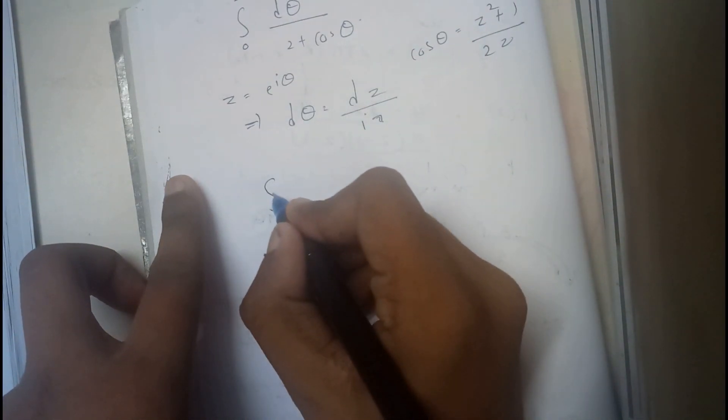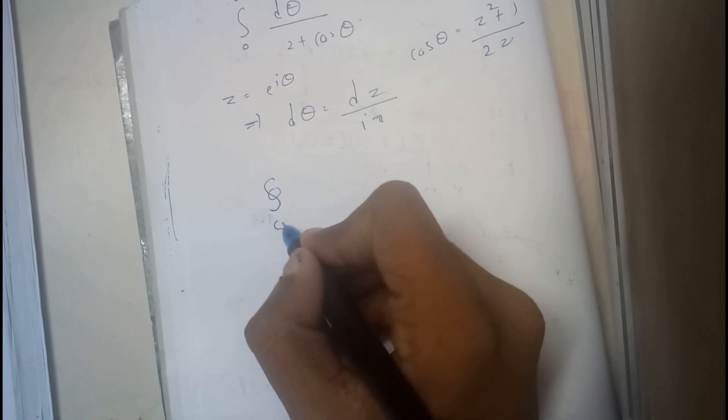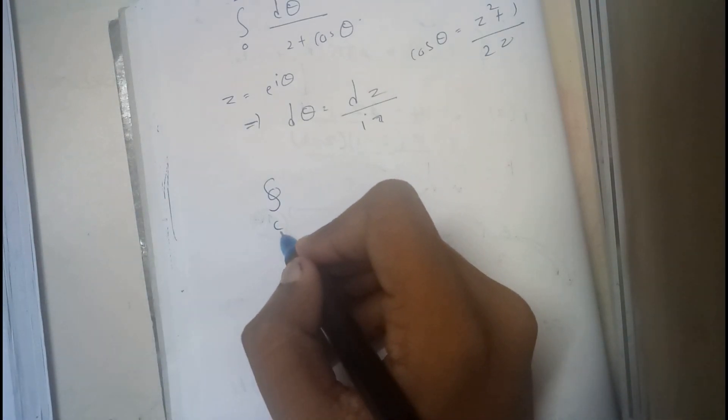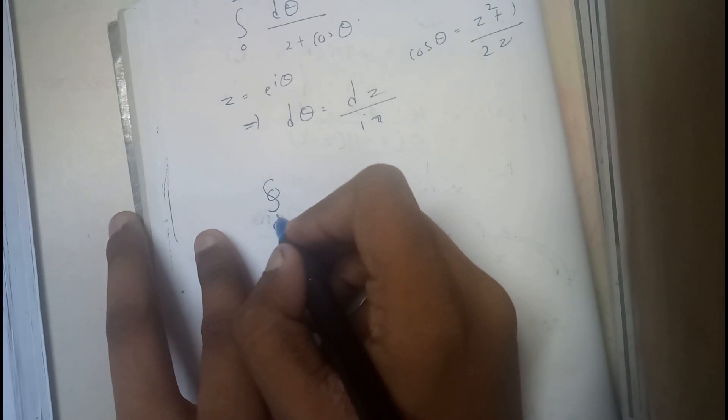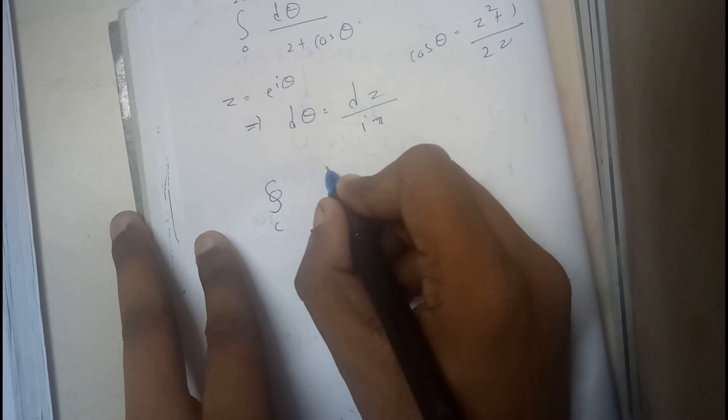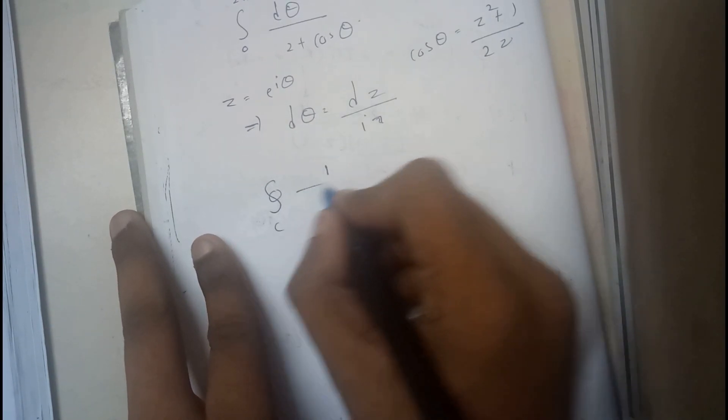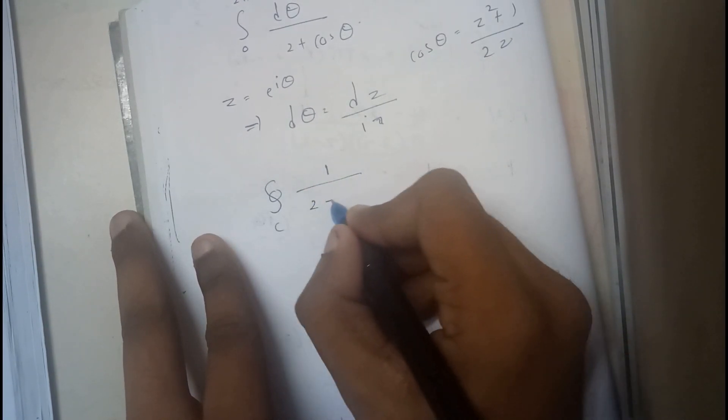So now you will be replacing dz and cos(θ) with that. Once you substitute these values, the integral is automatically changing into integral over c. So now it is really clear that it's in terms of closed integral c.